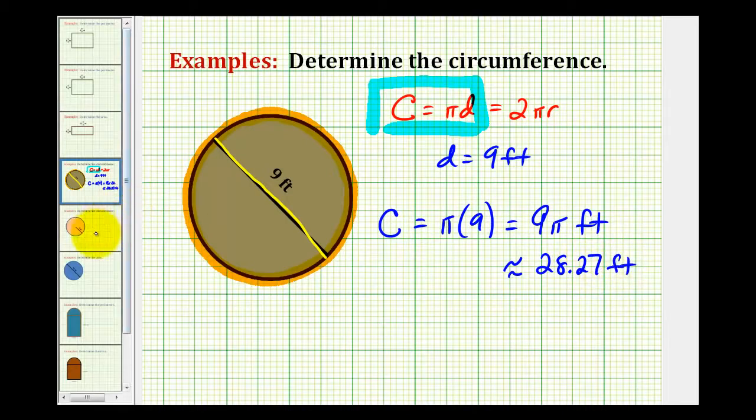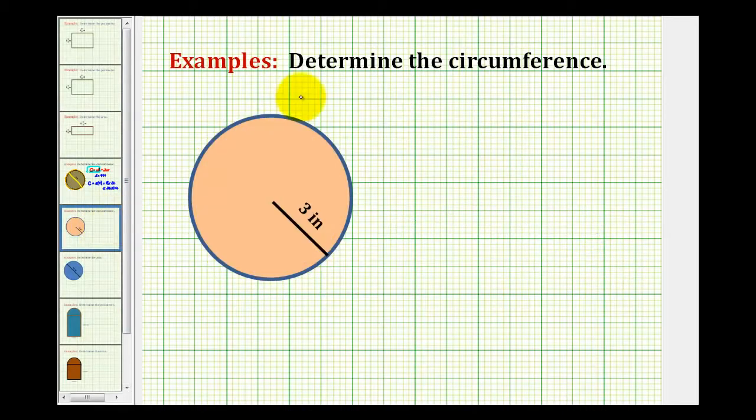Let's take a look at a second example. Notice on this problem we're given the radius of the circle, so we'll use the circumference formula two times pi times r. Here the radius is equal to three inches.